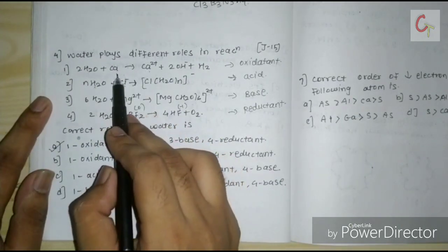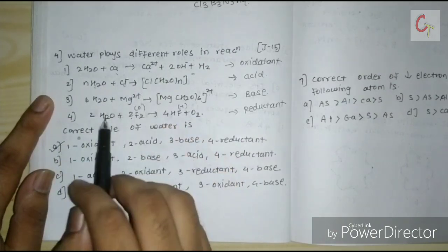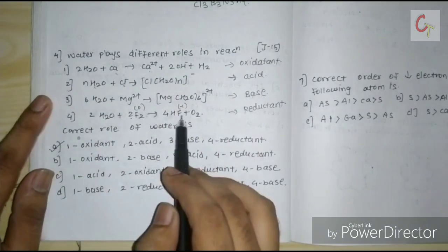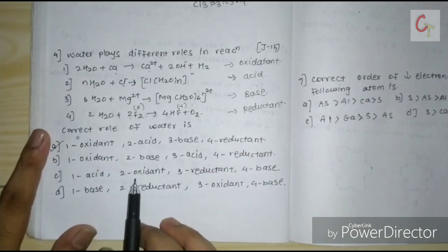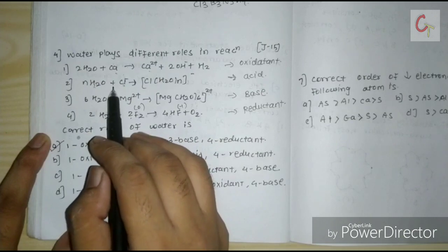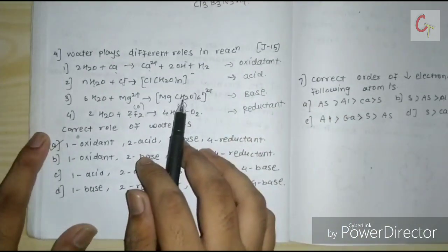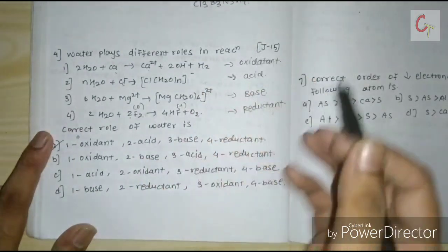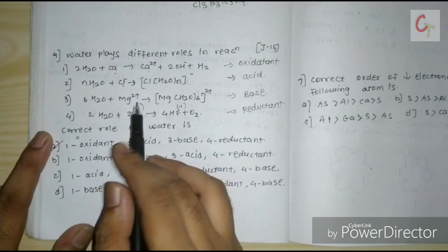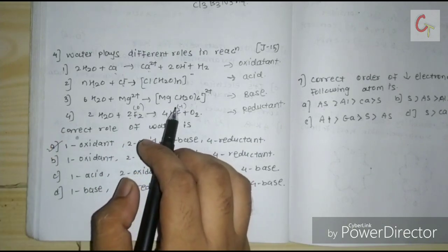Looking at reactions one and four: calcium is converted to Ca²⁺ so water acts as oxidant, and for fluorine the oxidation state changes to −1 so water acts as reductant. For the amphoteric nature, Lewis acids are generally metals and are electron acceptors, so water will act as a base when paired with them. The correct option is A.